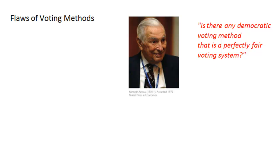In fact, there was a very famous — maybe not so famous, but certainly a really smart — mathematician and economist who was asked this question. His name is Kenneth Arrow. Here's a picture of him right here. Back in the early 1950s, he answered this question: is there any democratic voting method that is a perfectly fair voting system? And it turns out that the answer is no — there isn't. And he proved it.